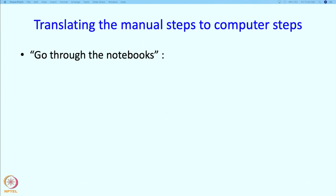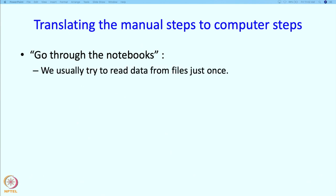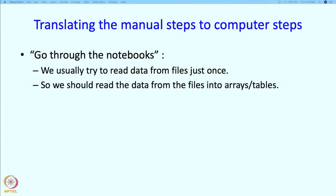What does it mean to say go through the notebooks? Well, nominally it would mean read through the file. But usually on a computer, our idea is we read the file just once — we do not read it repeatedly because reading files is often too slow. So what we do is we read the files and then we put the data into some array in our computer. We will read the data from the file into an array, or informally we can think of a table associated with the array.